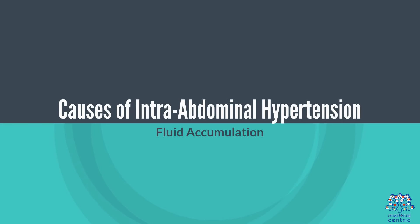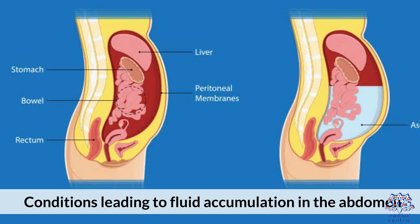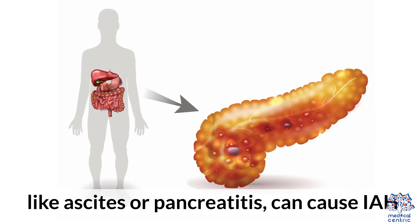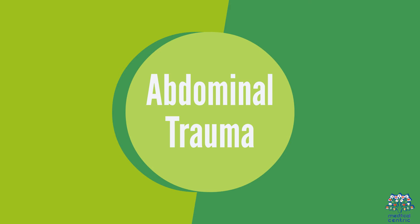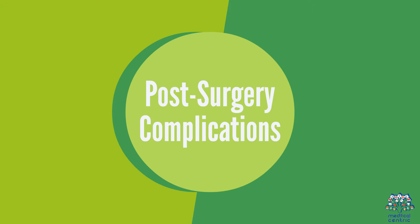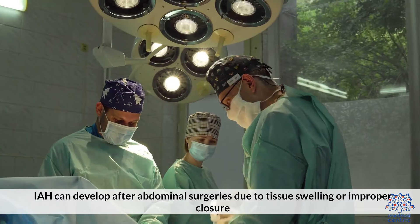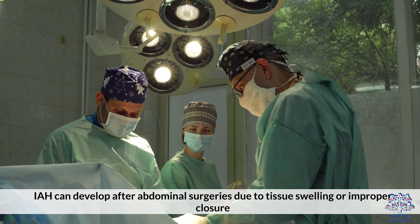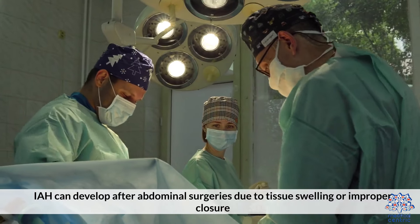Causes of Intra-Abdominal Hypertension. Fluid accumulation: conditions leading to fluid accumulation in the abdomen, like ascites or pancreatitis, can cause IAH. Abdominal trauma: injuries causing bleeding or swelling within the abdomen. Post-surgery complications: IAH can develop after abdominal surgeries due to tissue swelling or improper closure.